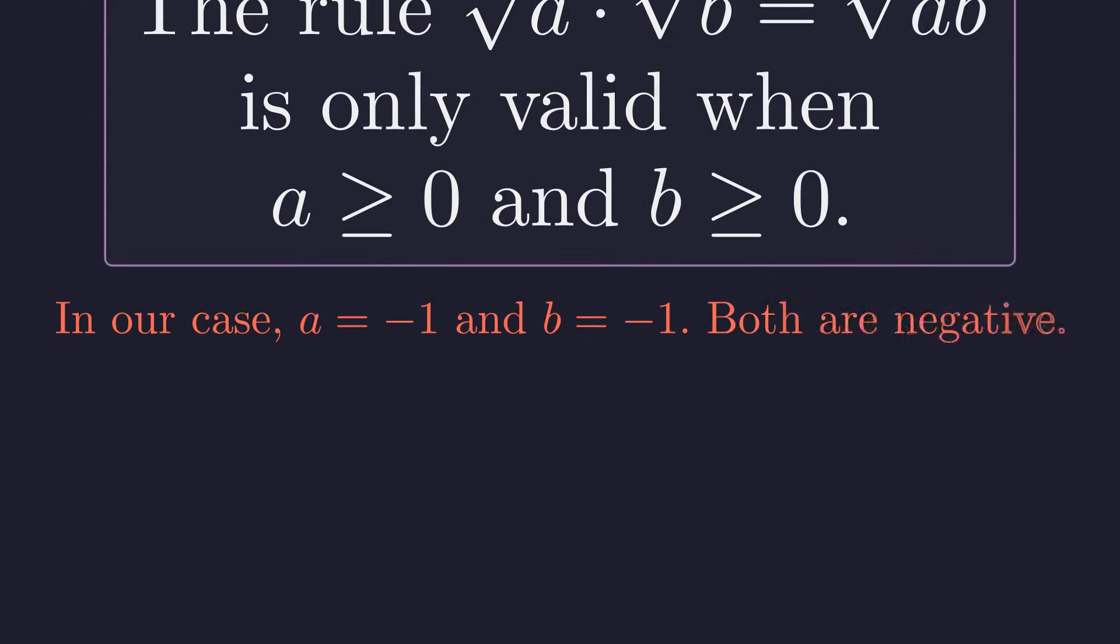And in our flawed proof, both a and b were negative 1. So we applied a rule in exactly the situation where it doesn't work.